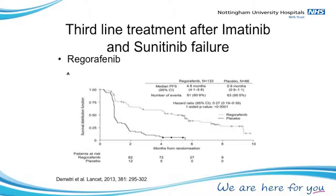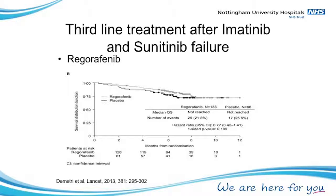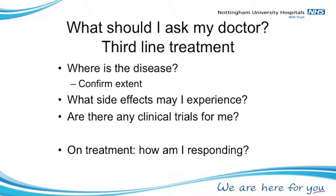If sunitinib fails as well, the next drug is regorafenib. That again showed that starting patients on regorafenib can delay GIST growth by a number of months and improve survival a little. Regorafenib seems to be better tolerated than sunitinib in many patients, so the question is whether to use it earlier — in second line — but that answer isn't established yet. If you are approaching third-line treatment, again you want to know: where is the disease, what are the side effects, are there any trials, and is it working?